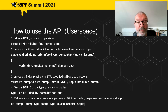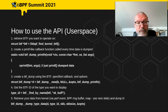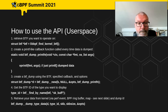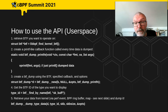To use the API, you need to get your BTF via btf__find_kernel_btf for the kernel BTF — there are other ways to get module BTF as well. You need to provide a callback function which will display or save your dumped information; in this case we're just printing it out. Then you create a BTF dump using your BTF and your dump function, and look up the BTF ID for the type you want — here we're looking up struct sk_buff to get its type ID.